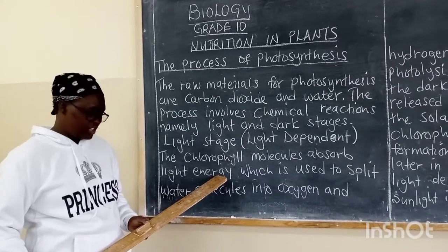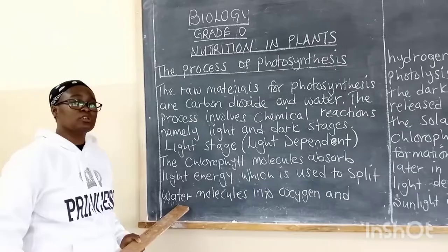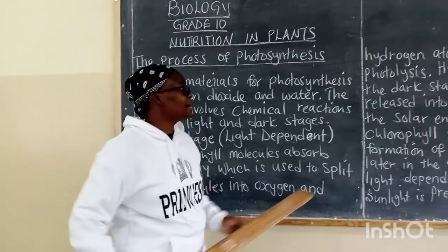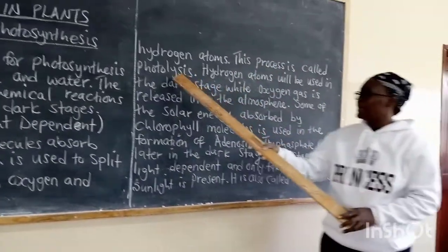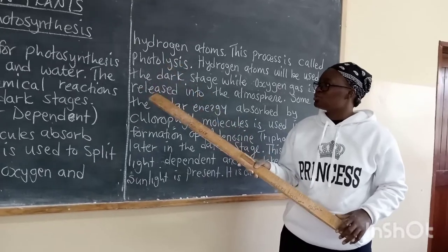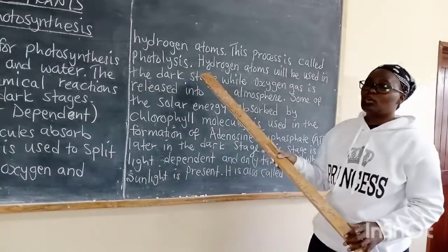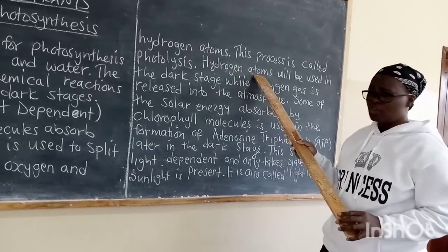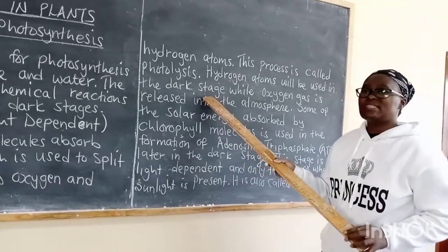Just from the word 'light,' we know that during this process light is very important. This is the initial stage of photosynthesis. The chlorophyll molecules in the leaves absorb or trap light energy. This light energy is used to split water molecules — water molecules contain hydrogen and oxygen — so water is split into oxygen gas and hydrogen atoms. This process is called photolysis, from the word 'photo' meaning light.